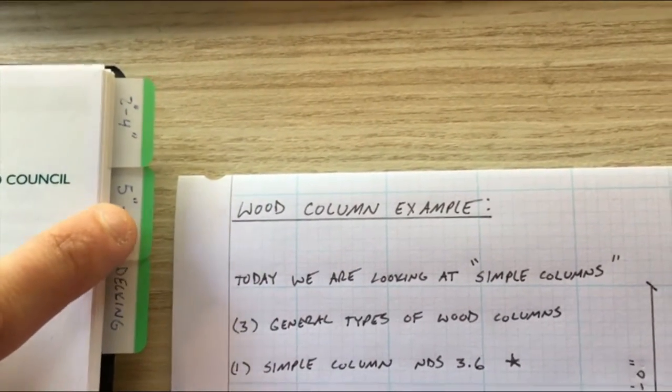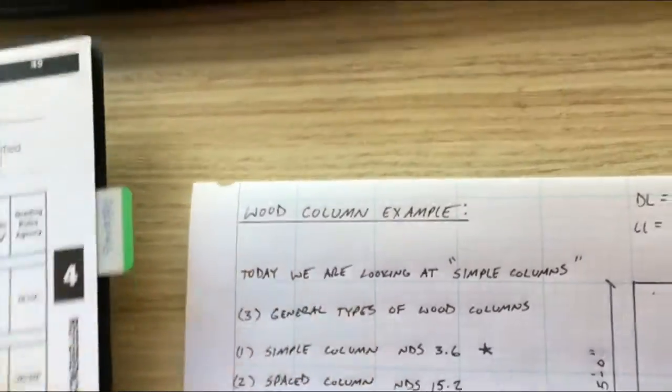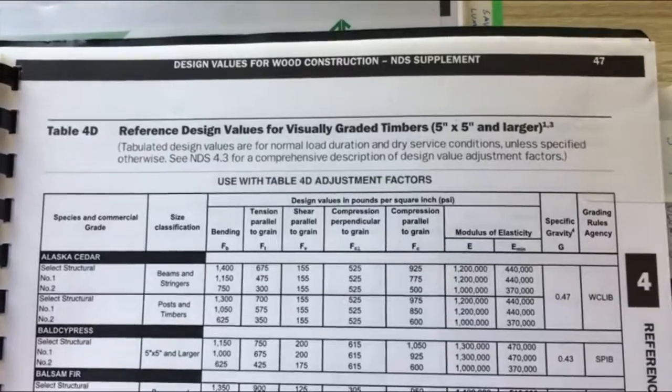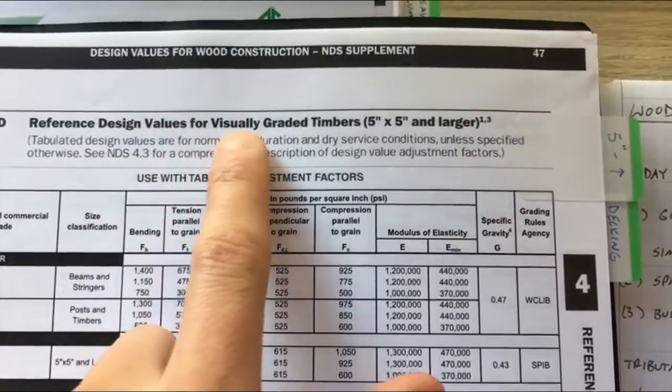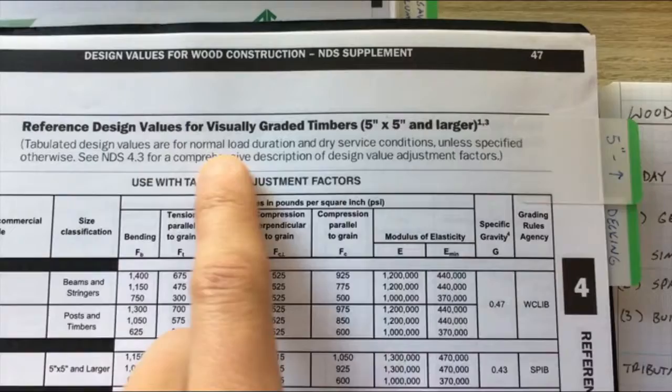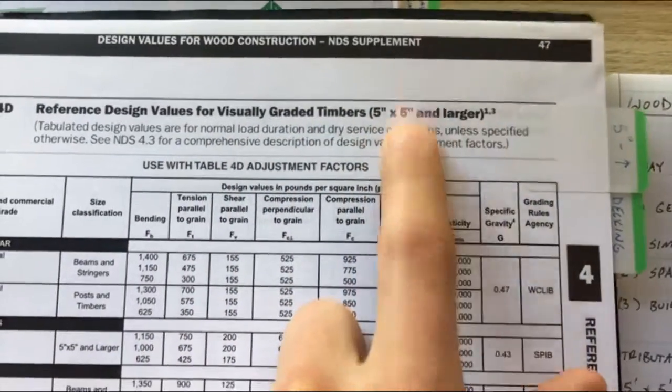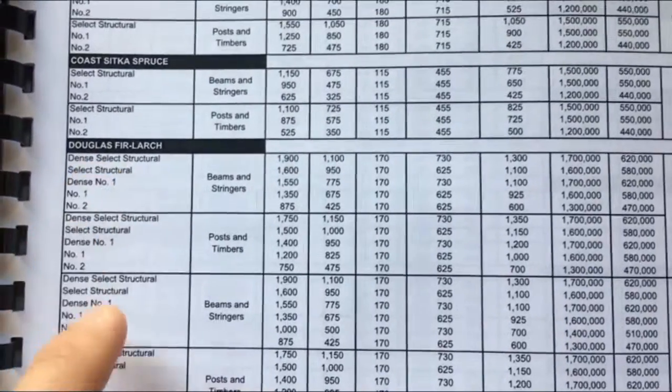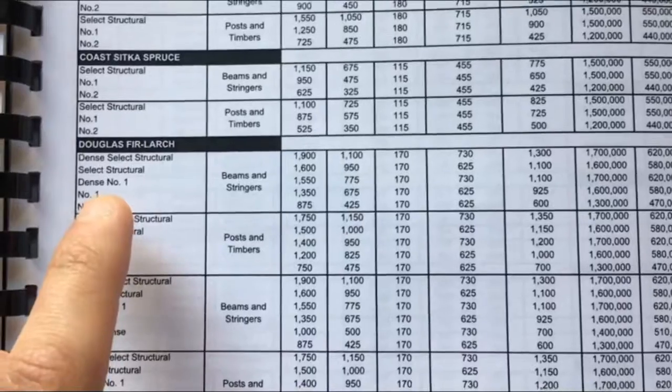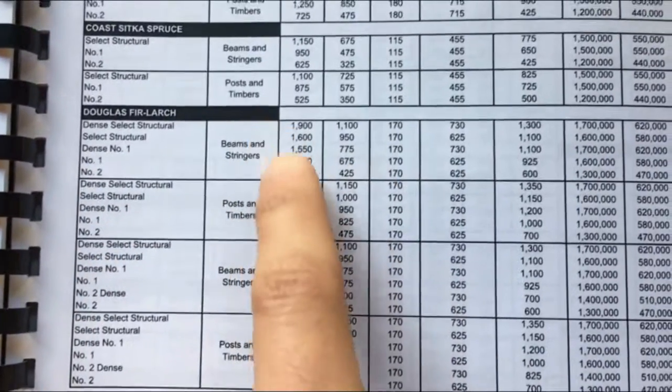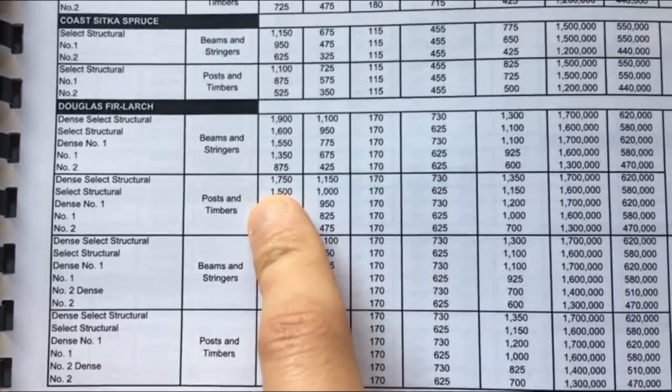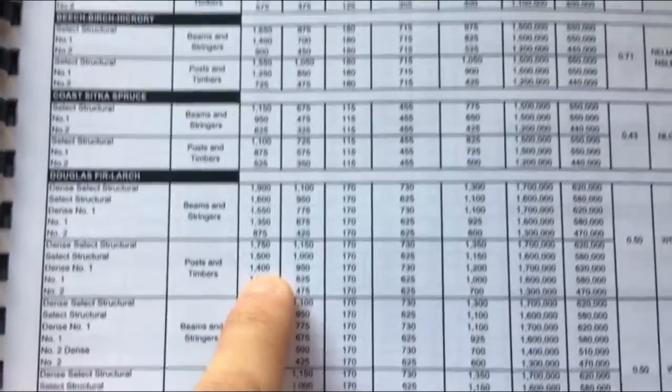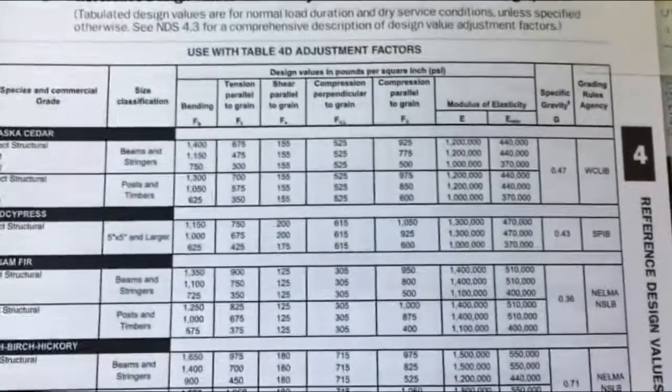We have a six by six column so we're going to flip to that tab. If you don't have it tabbed, that just takes me to table 4D. You'll see it says in the title here, design values for visually graded lumber five by five and larger, so that's us. Doug Fir, we want to head down to Doug Fir and then I've decided to go with a select structural. You'll notice you have beams and stringers section then you have posts and timbers section. So this is us, we're posts, select structural. We're going to go across.